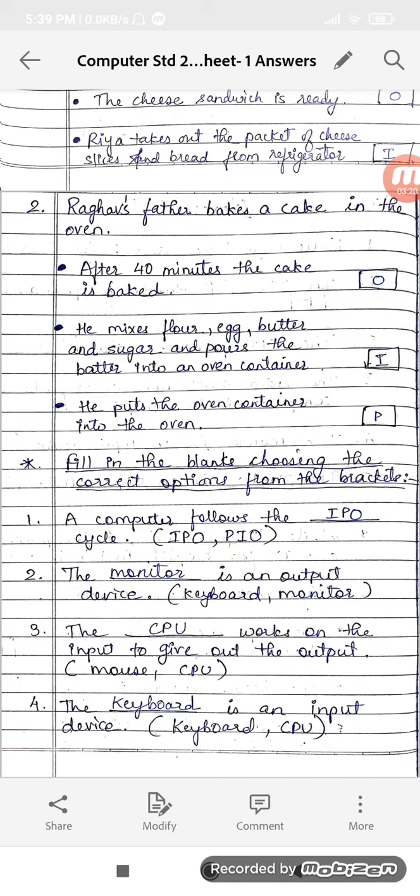Next, the monitor is an output device, right? Monitor is an output device. Keyboard is input device, right? We can put in information through keyboard inside the computer, so that will be your input device.